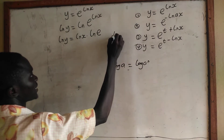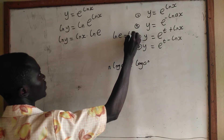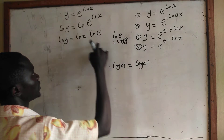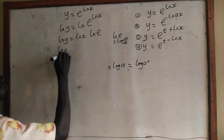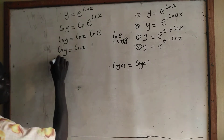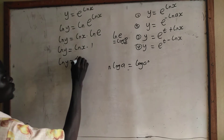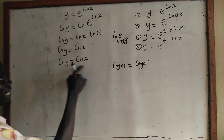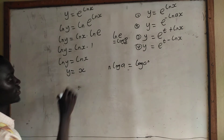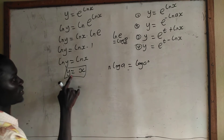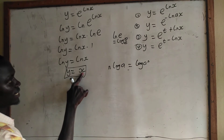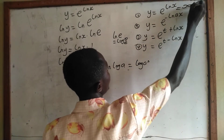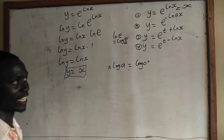We know that ln e is the same as log base e of e, which equals 1. So we have ln y equal to ln x times 1, which gives ln y equal to ln x. Now we take anti-ln on both sides and we have y equal to x. So since y equals x, and y equals e to the power ln x, the whole expression e to the power ln x is equal to x.